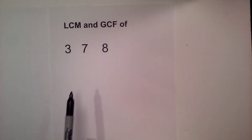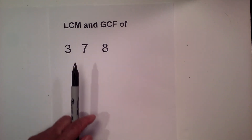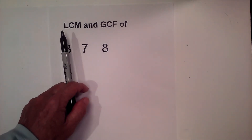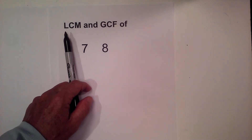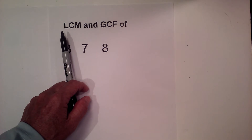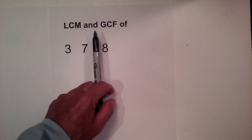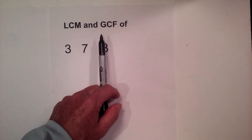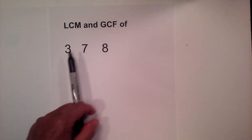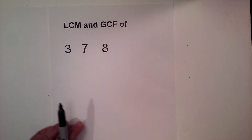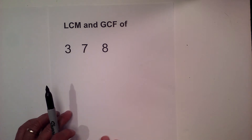In this video, let's learn how to find the LCM (lowest common multiple) and the GCF (greatest common factor) of three, seven, and eight. I like to use a factor tree for each of these.